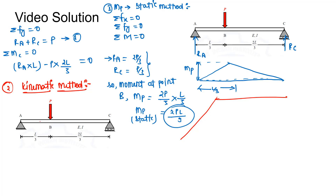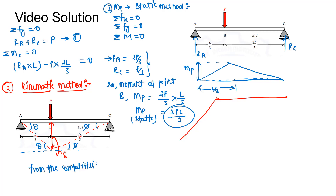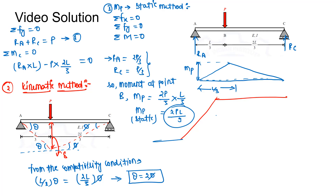Now for the second method, the kinematic method: due to the point load P, the beam AC will deform. Let the deflection be delta, the deformation angle at one side be theta, and at the other side be phi. From the compatibility condition: delta = (L/3) × theta = (2L/3) × phi, which gives theta = 2 phi.